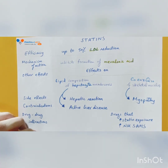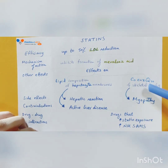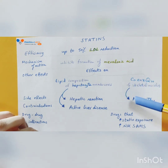A similar concept applies to the second prevalent side effect, which is myopathy. Statins block the synthesis of coenzyme Q10, which is thought to be involved in the pathogenesis of statin-induced myopathy.